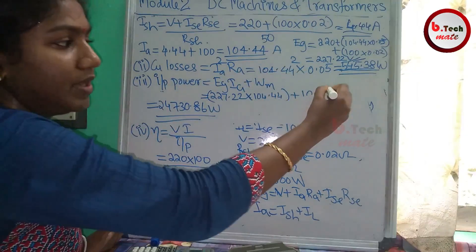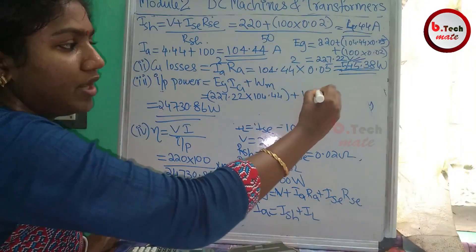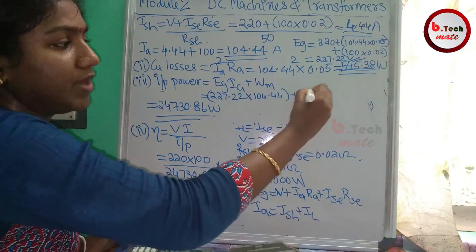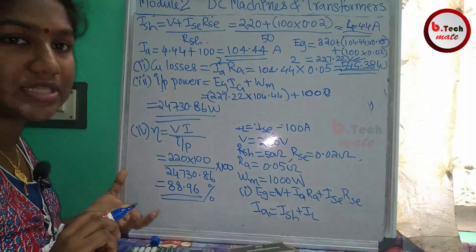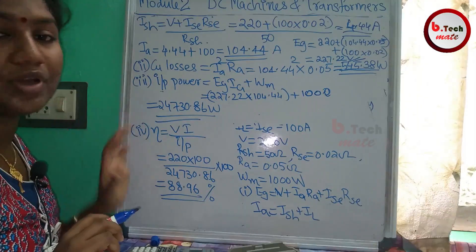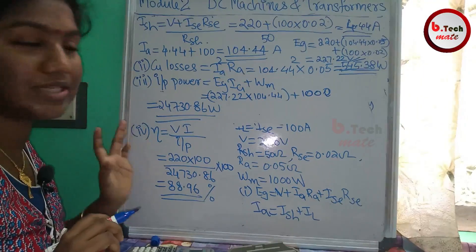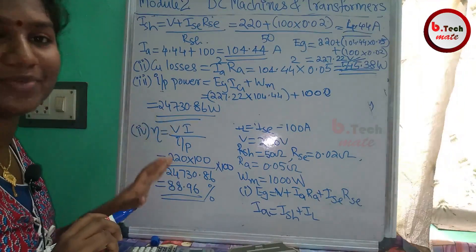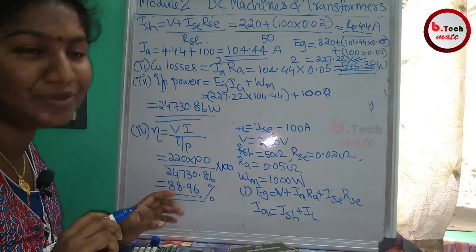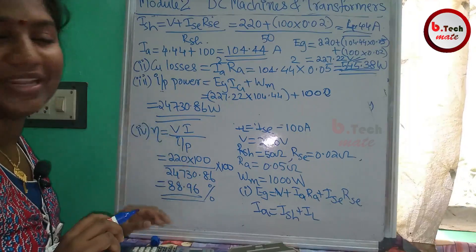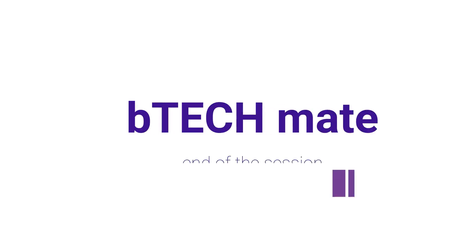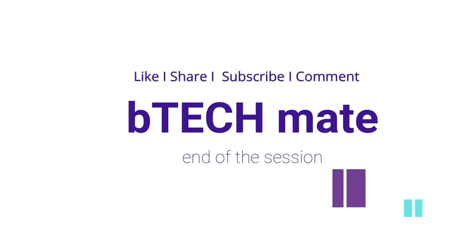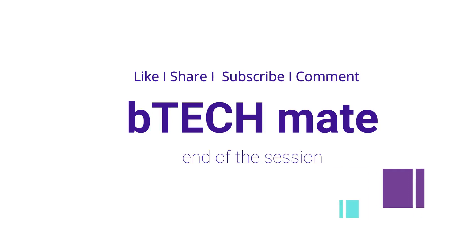This is the same problem solved with the same model — a machine operating as a short shunt compound generator. We have now completed the short shunt generator efficiency calculation.